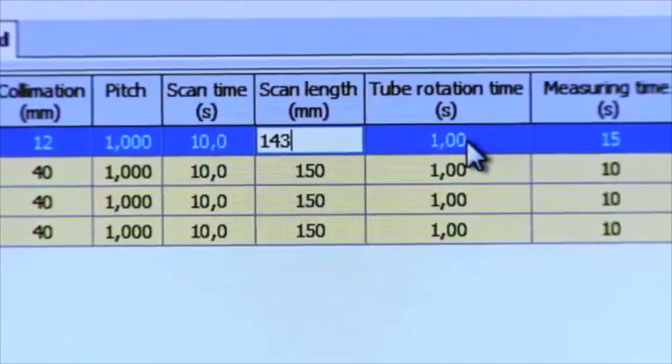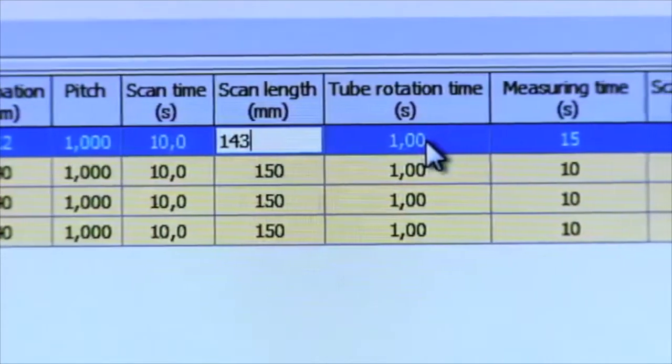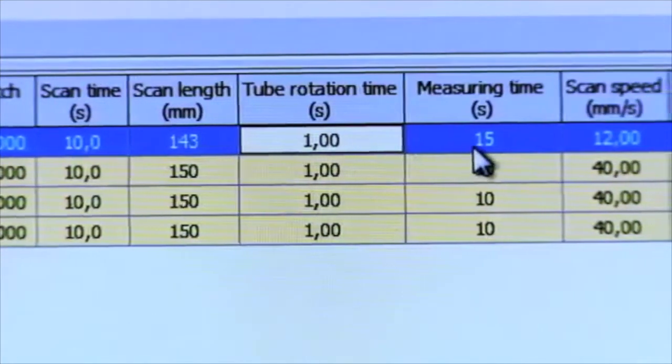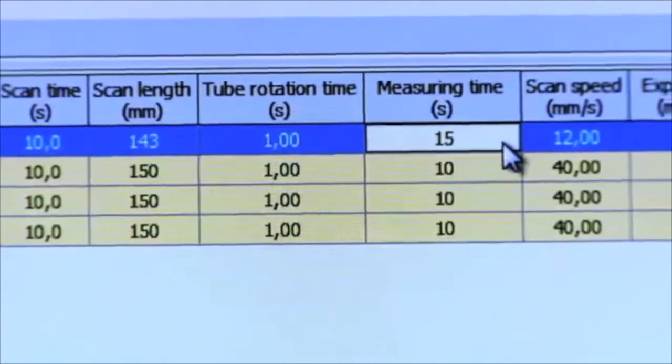For helical scans, two collimation lengths must be added to the length you see in the scouts. Tube rotation time.